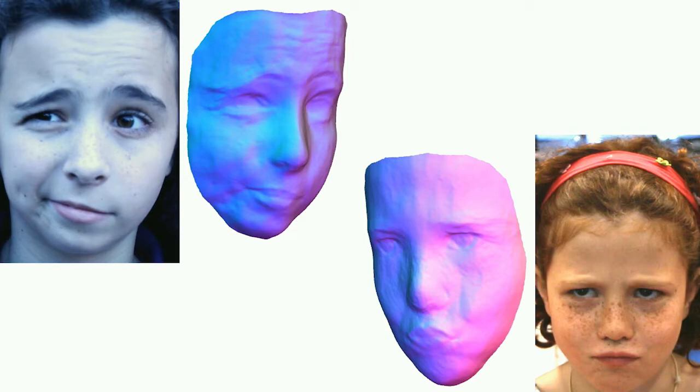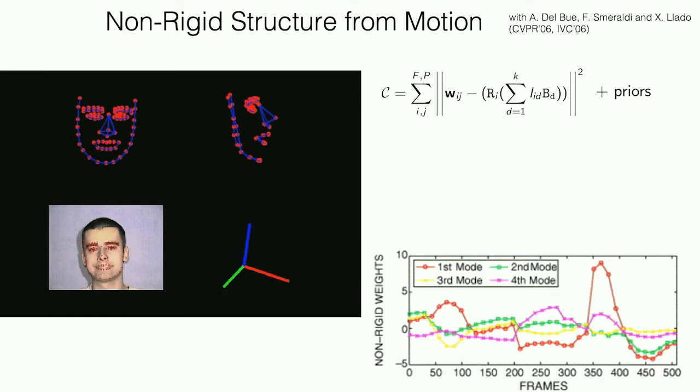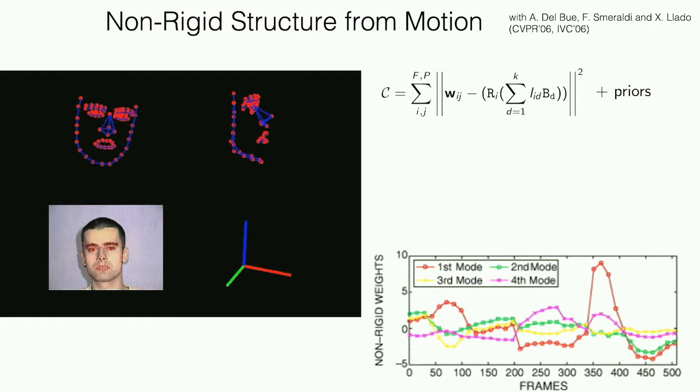I started working in this direction many, many years ago. This problem in computer vision is understood as non-rigid structure from motion. We started in early 2000, and these are some results of what we could do in 2006. It's pretty basic — we've moved on quite a lot.